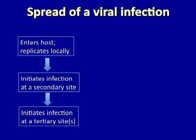For most viral infections, when they infect a new host, they begin to replicate locally where they have been inoculated. In some cases, the virus may initiate an infection at a secondary site if it is equipped to spread to other cells, or even to a tertiary site. I'll give examples of each of these.